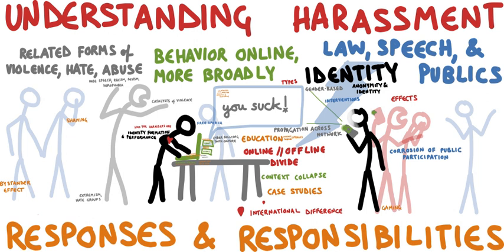The content of websites and other electronic communications may be distasteful, obscene or offensive for a variety of reasons. In some instances these communications may be illegal. The extent to which these communications are unlawful varies greatly between countries, and even within nations. It is a sensitive area in which the courts can become involved in arbitrating between groups with strong beliefs. One area of internet pornography that has been the target of the strongest efforts at curtailment is child pornography, which is illegal in most jurisdictions in the world.